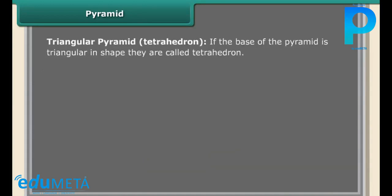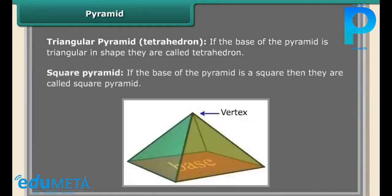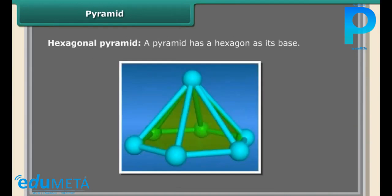Tetrahedron: if the base of the pyramid is triangular in shape, they are called tetrahedron. Square pyramid: if the base of the pyramid is a square, then they are called square pyramid. Hexagonal pyramid: a pyramid has a hexagon as its base.